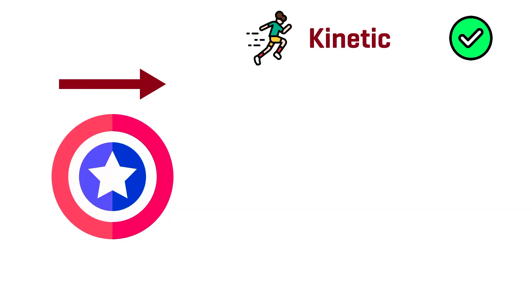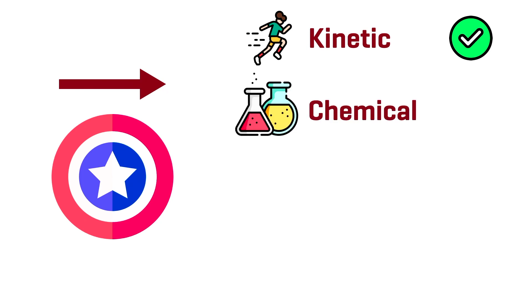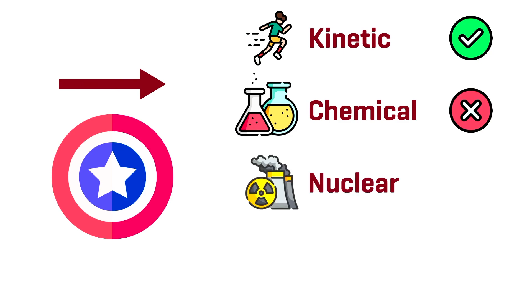When the shield is thrown, it has kinetic energy related to its translational motion through space. But what other energies might be associated with the motion of Captain America's shield? Is it using chemical energy to move through the air? Definitely not. Is it using nuclear energy? Definitely not. But what about rotational energy?